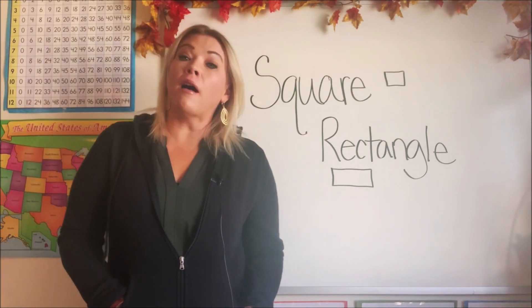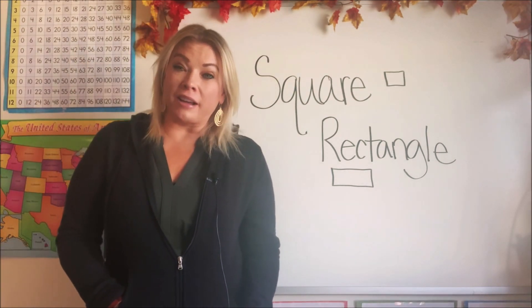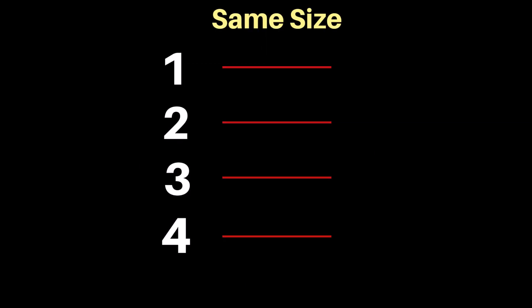First, let's learn about the square. A square has four sides — one, two, three, four. Can you tell from looking at the square that each side is the same size? If we were to lay each side of the square out, they would all be the same length.